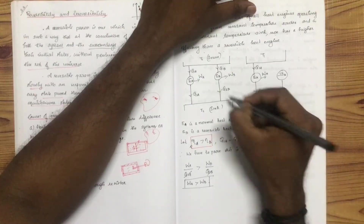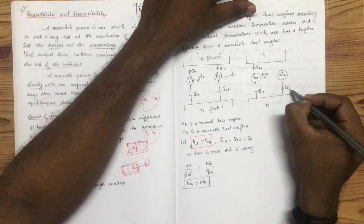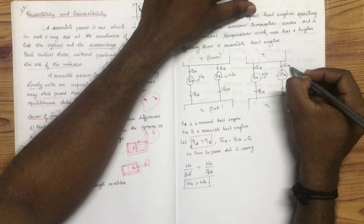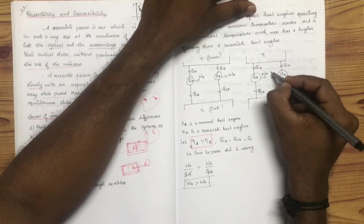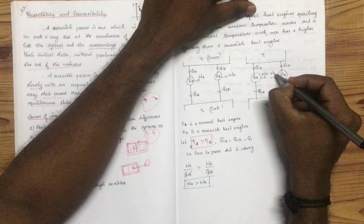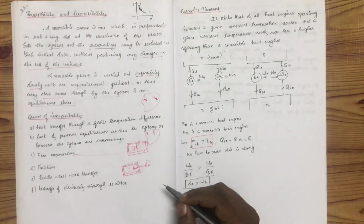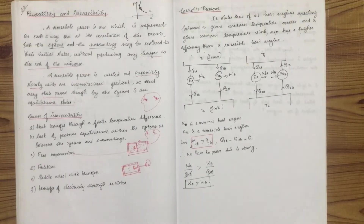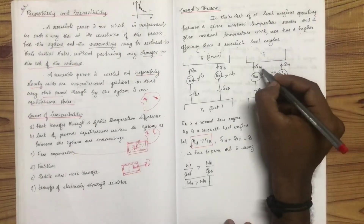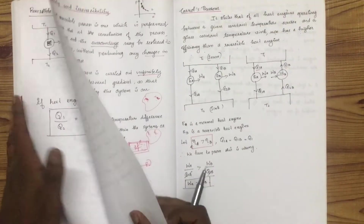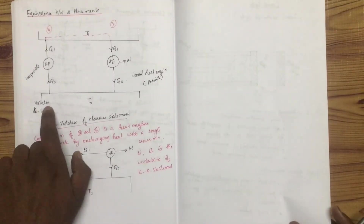If you want to change the reversible heat engine, we change Q1B and the work transfer WB accordingly. If we reverse EB and combine it with EA as a single heat engine, it gives WA minus WB work output by exchanging heat with a single reservoir. This is a violation of the Kelvin-Planck statement.